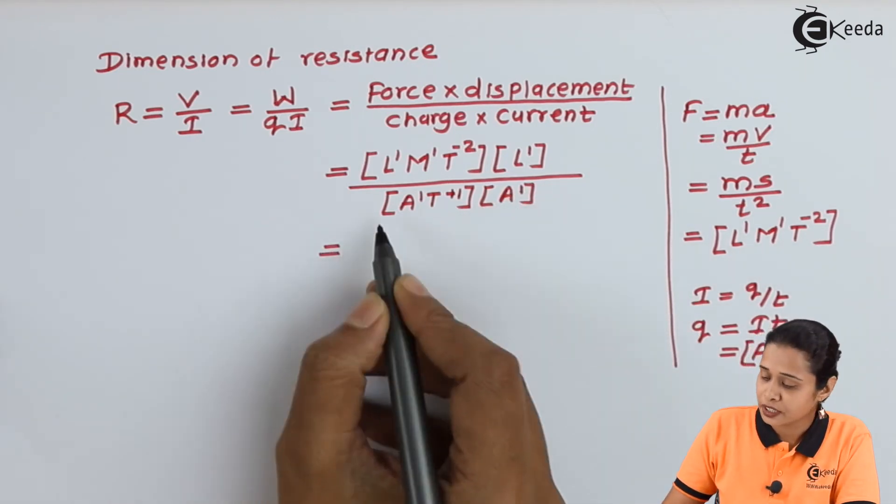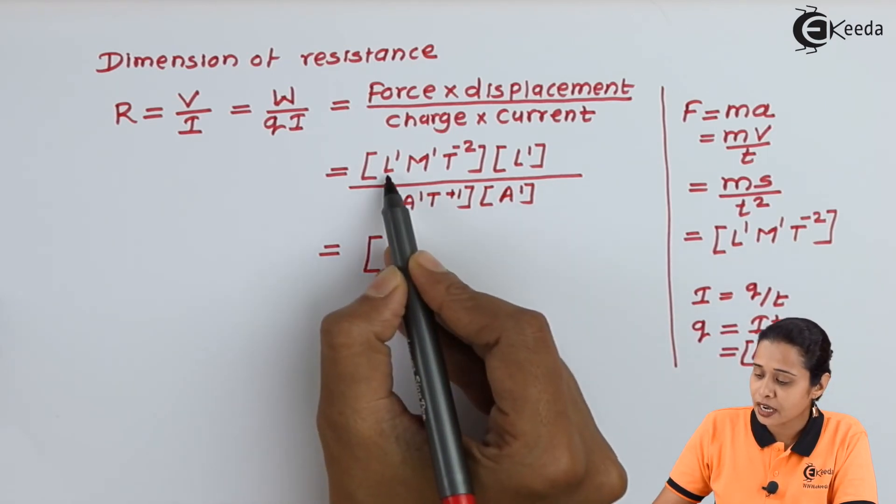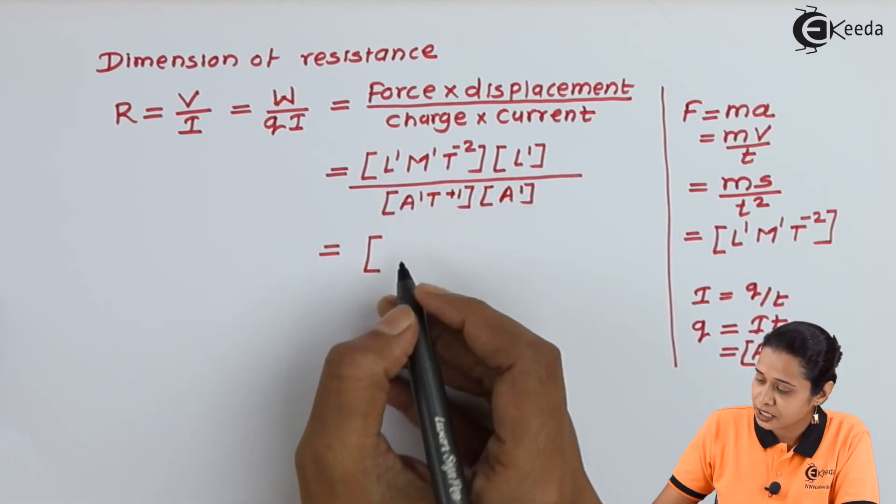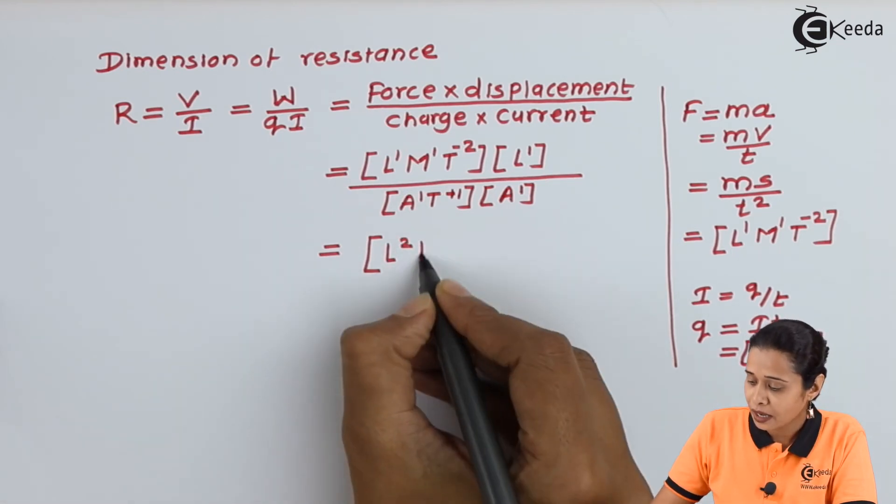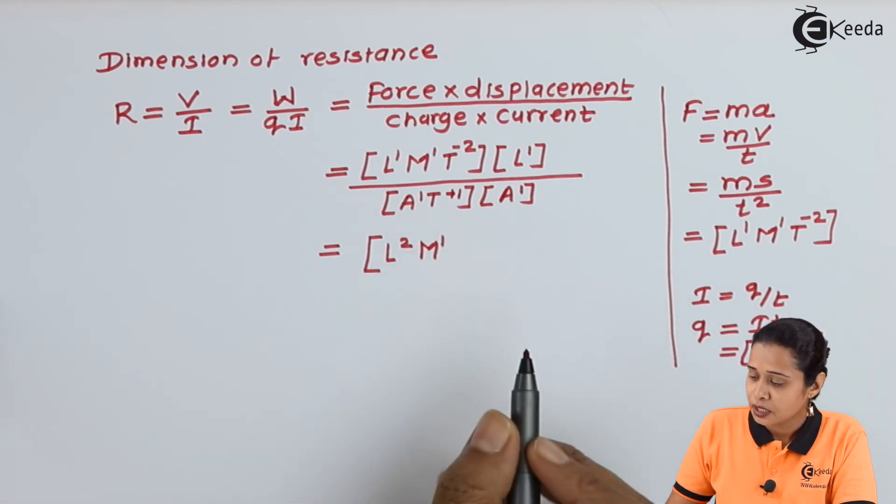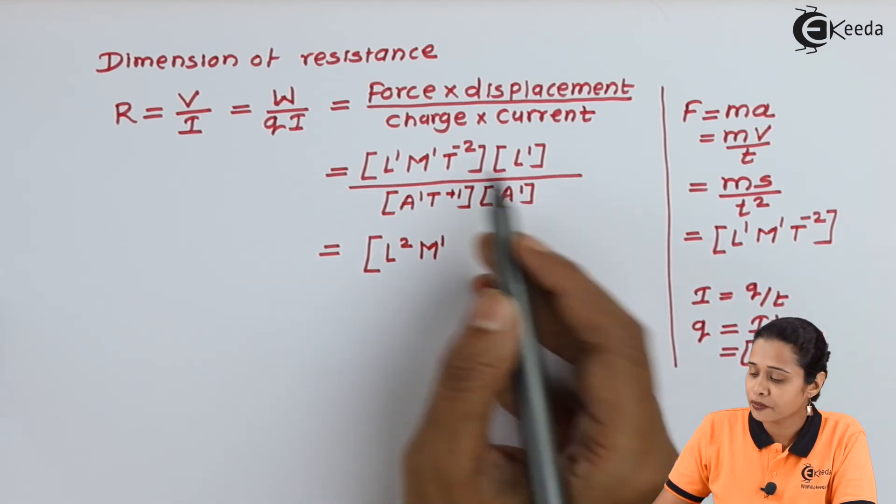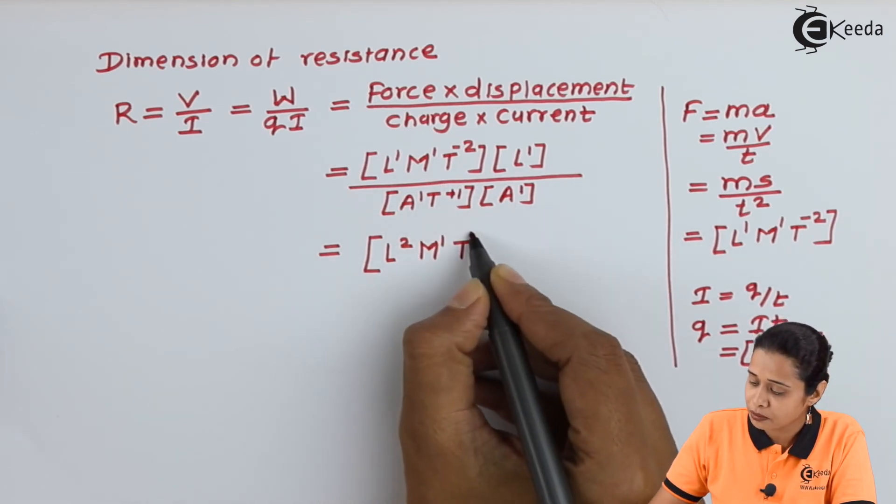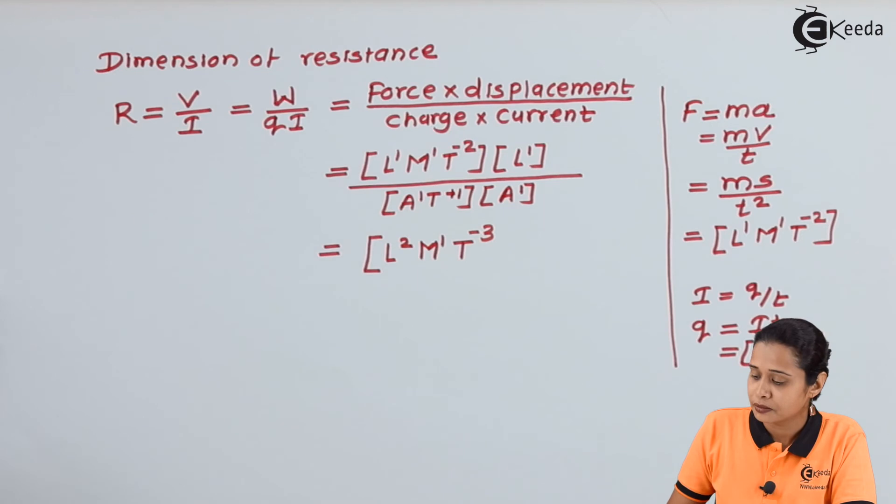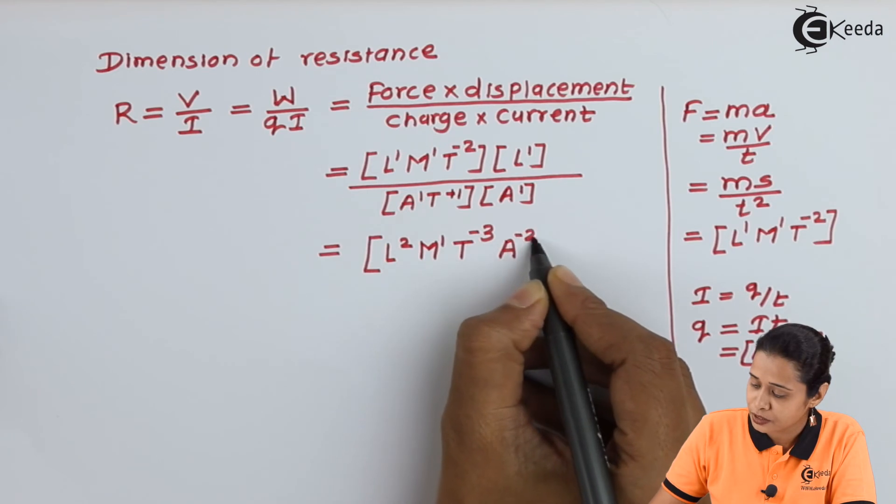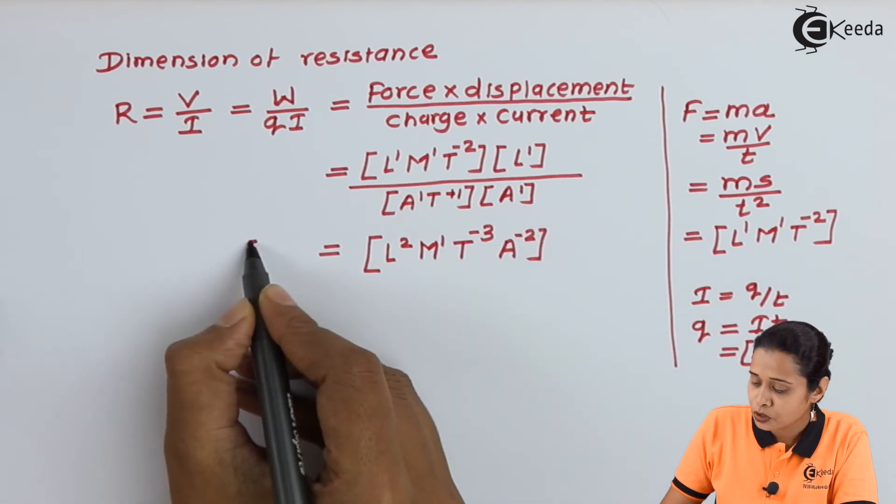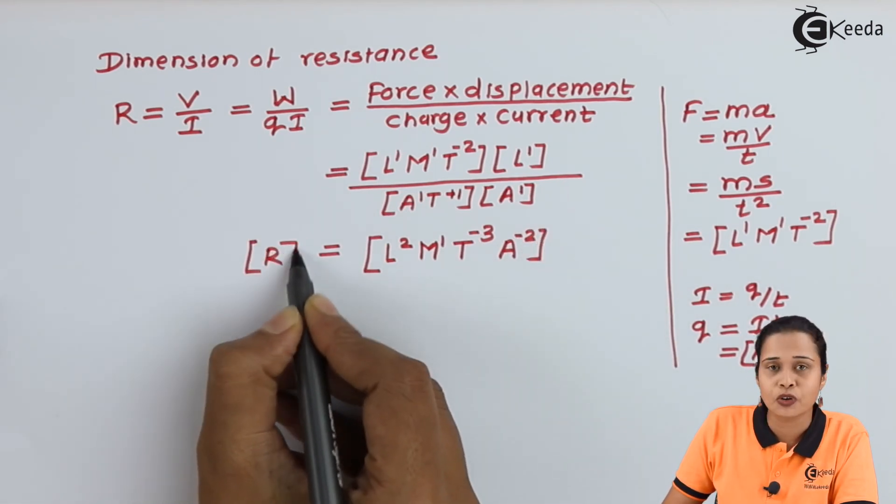After solving this, we get L¹ times L¹, which means L²M¹. This T is in the denominator, when it goes up it becomes minus 3. And A is also in the denominator, when it goes up it becomes A minus 2. So, the dimension of resistance is L²M¹T⁻³A⁻².